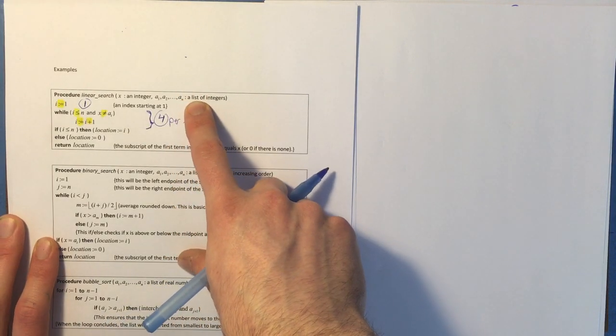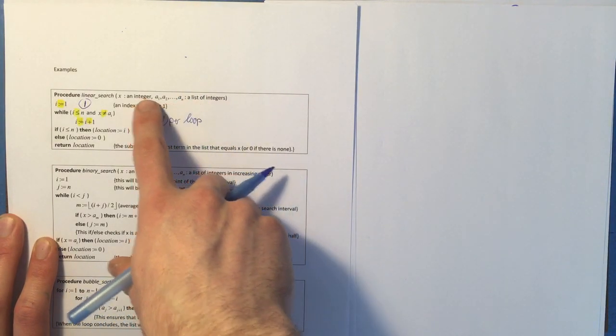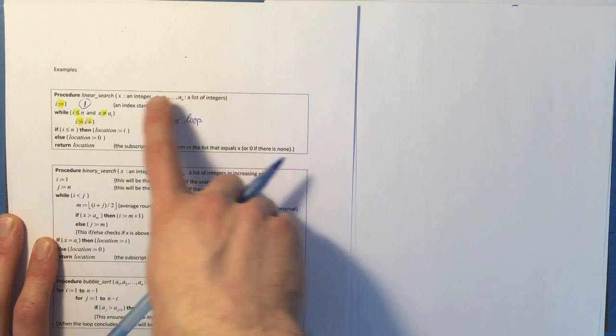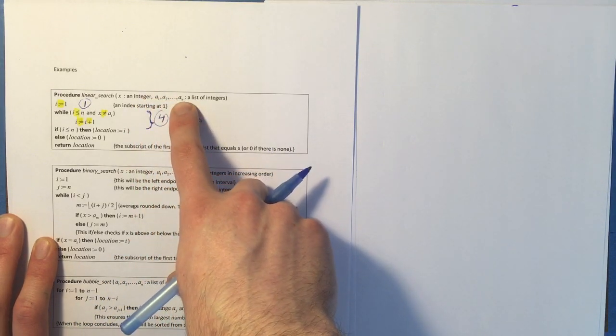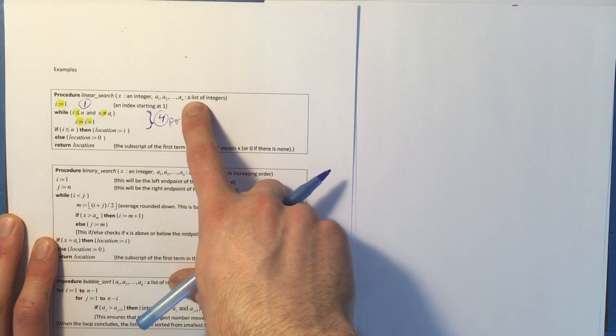So if you never find the element you're searching for, you're going to get all the way to the end of the list, and you're going to run through that loop n times.